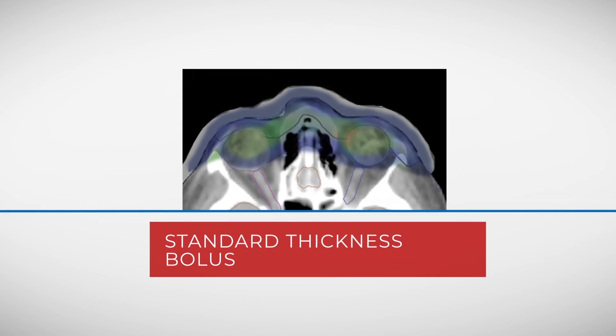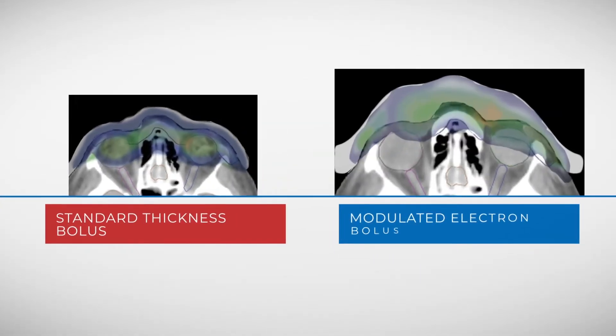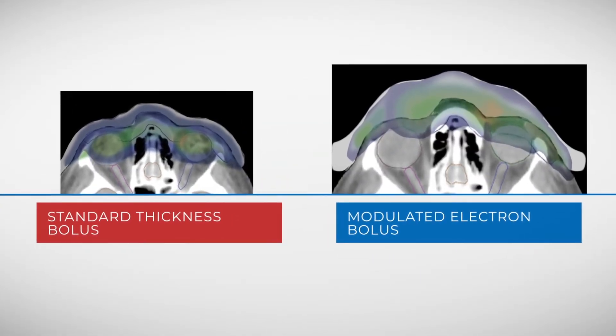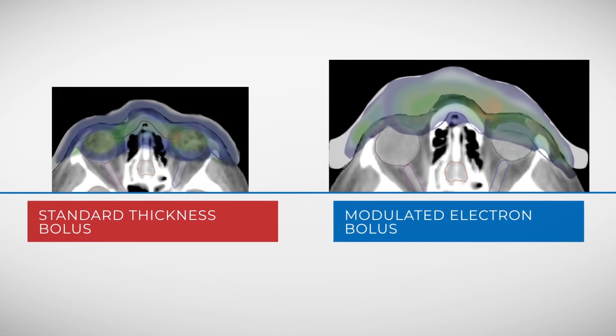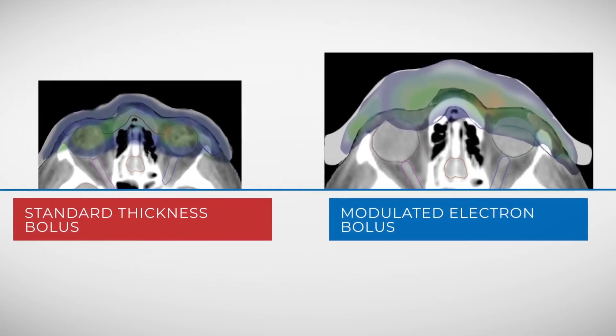Compared to standard thickness bolus, the modulated plan achieved relative sparing of all the organs at risk distal to the target volume while maintaining similar target volume coverage.